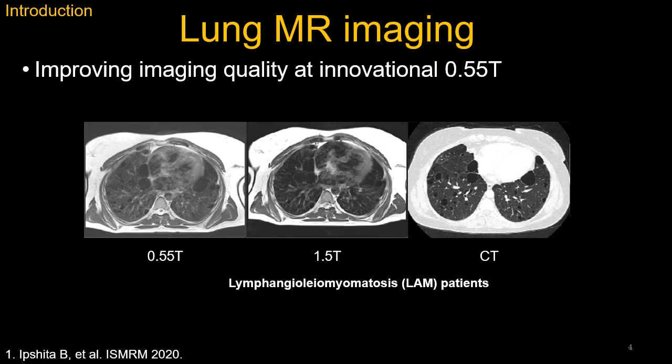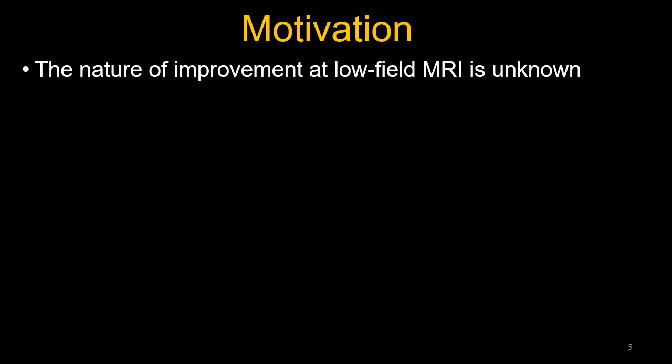Recently, low field strength — specifically 0.55T — has shown great promise, as shown in this example from the NIH group. The excellent performance at 0.55T is largely attributed to reduced susceptibility effects. However, the precise nature of the improvement is not fully understood.